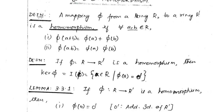Next, we have the definition of kernel. If phi from R to R' is a homomorphism, only then we can talk about the kernel. Kernel phi, denoted as I of phi, is the set of all those elements in the domain which are mapped onto the zero element of the codomain — also called the additive identity of the codomain. So it is the set of all a in R such that phi of a is 0 prime.